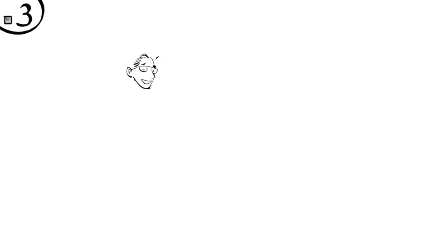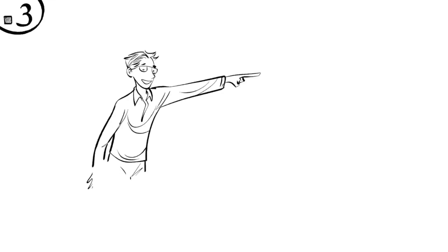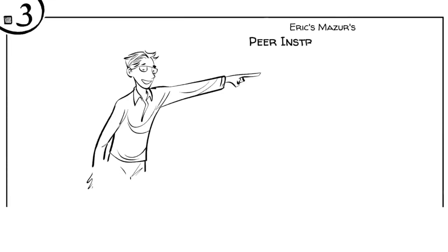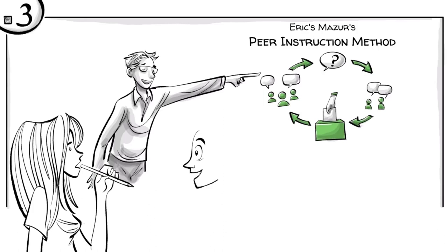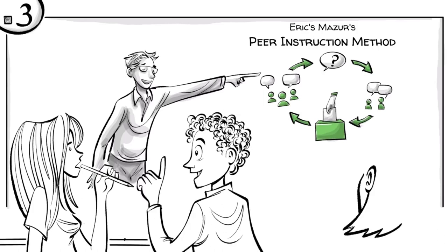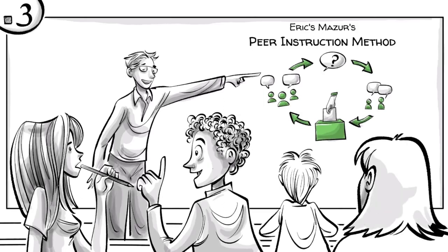Step 3. Without telling the students how they voted and following Eric Mauser's peer instruction method, which involves questions, peer discussions, votes and group discussions, the students then discuss the question and their answers with one or two classmates, ideally with someone who disagrees with their own opinion.